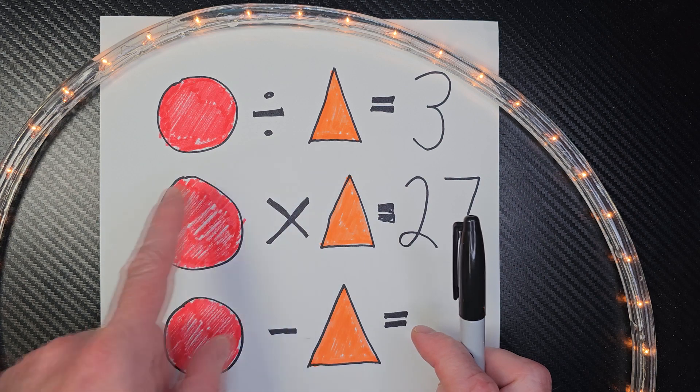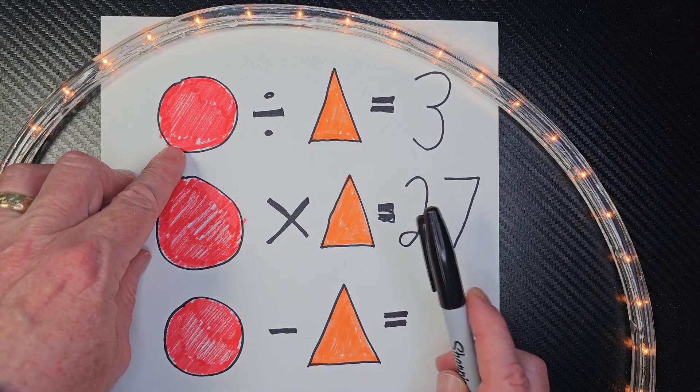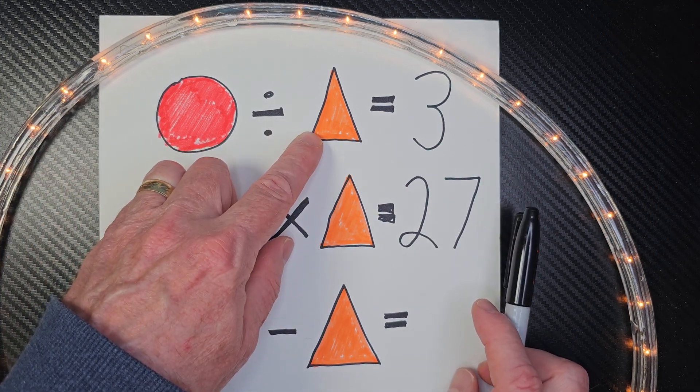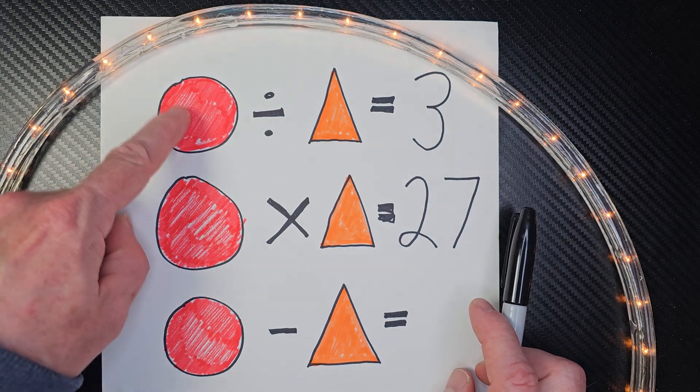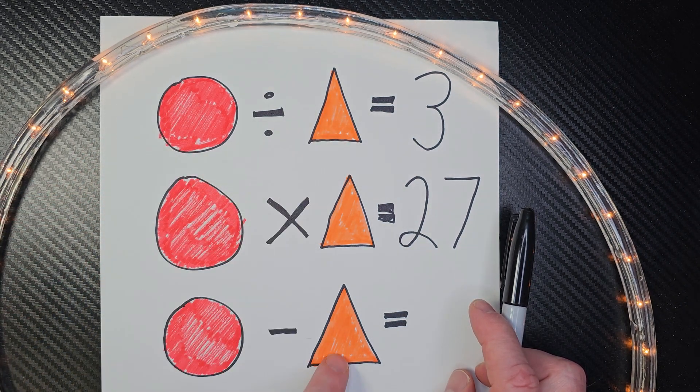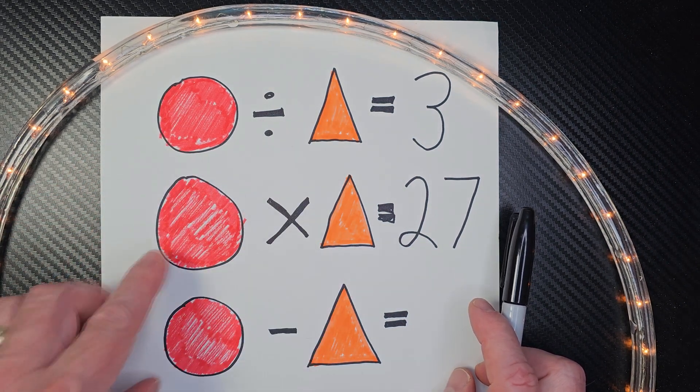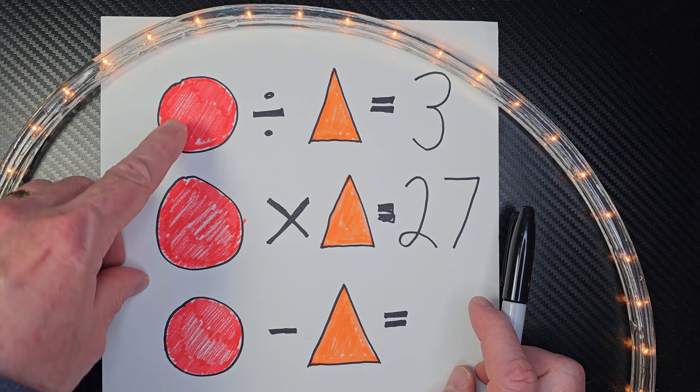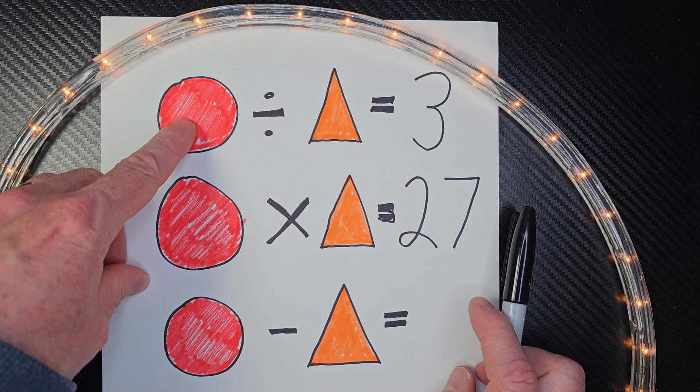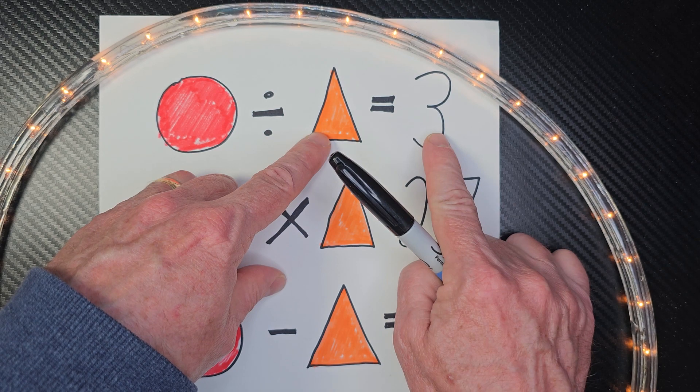So my first line right here, it's some number divided by some number equals 3. I notice that all of these are circles and all of these are triangles, so they're all going to have the same value. So if I did 3 divided by 1, that would equal 3.